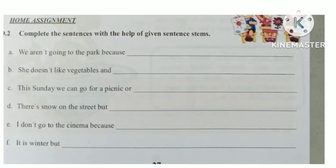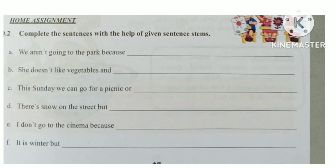Now look at question number 2. It's again your home assignment. Complete the sentences with the help of the given sentence stems. They have given you the starting of the sentences and you have to complete them according to the given conjunctions. Part A: we aren't going to the park because — you have to write the reason. Part B: she doesn't like vegetables and — AND shows similar ideas, so complete the sentence. Part C: this Sunday we can go for a picnic OR — OR shows choices, so write the other option. You will complete this question at home.